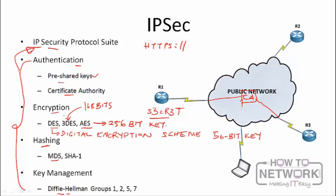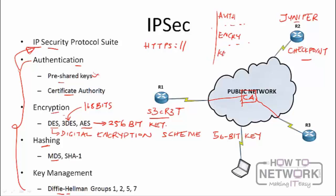Different devices have different default protocols for authentication, encryption, and so on. If you're forming a VPN between a Cisco router and a Juniper or Checkpoint device, the defaults may differ. You need to coordinate with the administrator at the other end and agree on a set of protocols — authentication, encryption, and key management — so that when both sides agree, they can establish the VPN and start communicating securely over the public infrastructure.